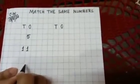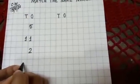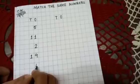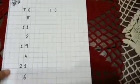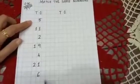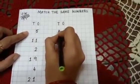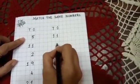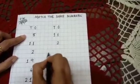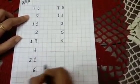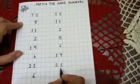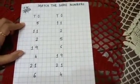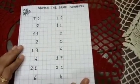The numbers are: five, eleven, nineteen, twenty-one, and six. And one more is four. Write both sides: eleven, two, five, six, nineteen, twenty-one, and four. Both sides you write the numbers.